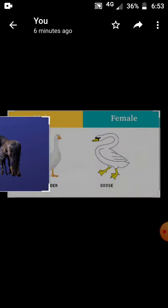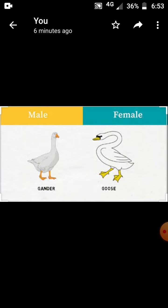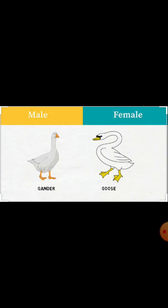See the next animal. What is that? Gander. Gander is one type of duck. The masculine name is gander, but the feminine name is goose.